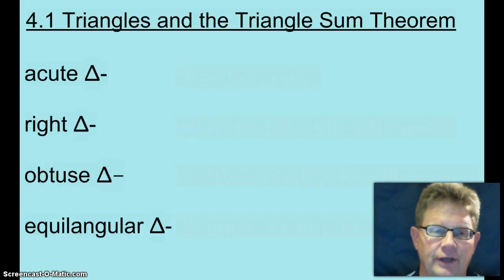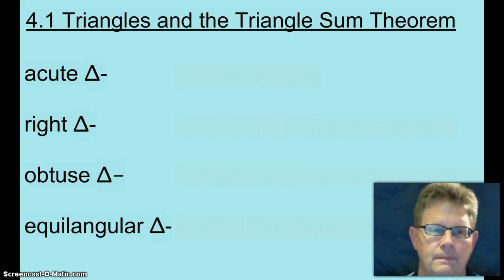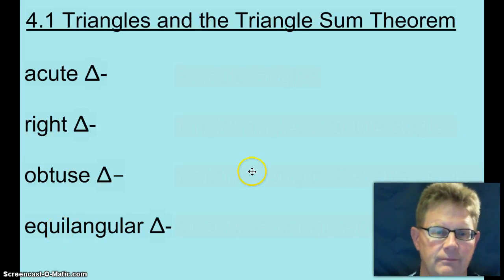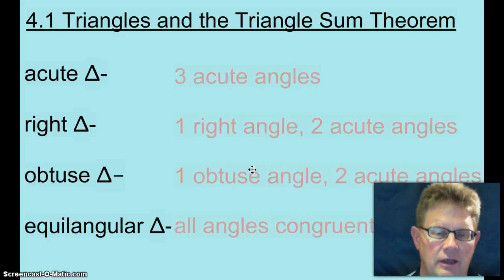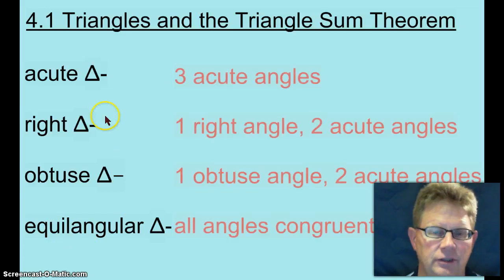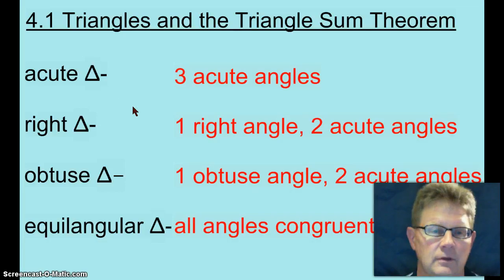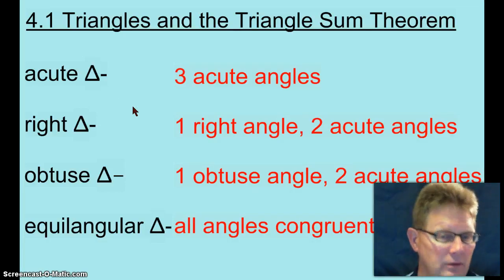Another way to classify triangles is by looking at the angles: an acute triangle, a right triangle, an obtuse triangle, and an equiangular triangle. There are the definitions of those four triangles. You can pause and write if you don't know what those are.